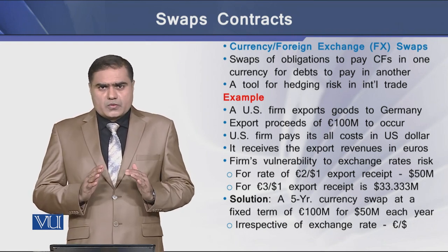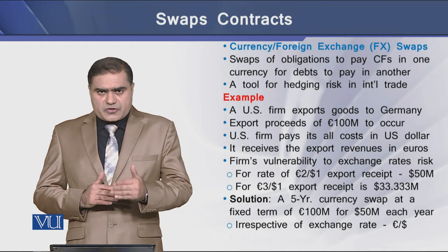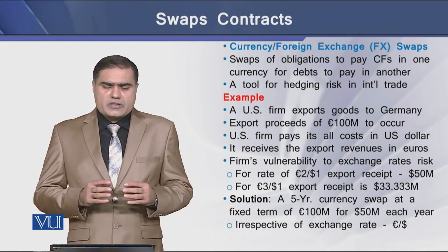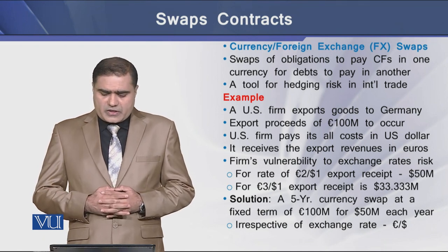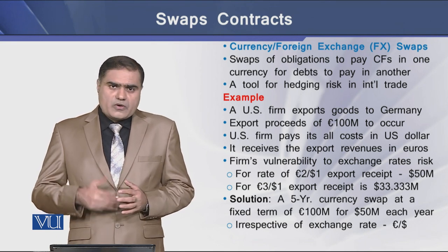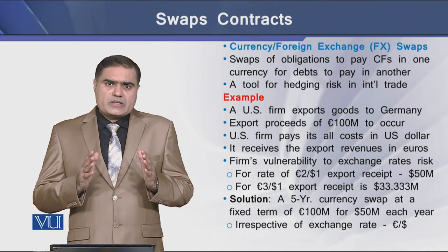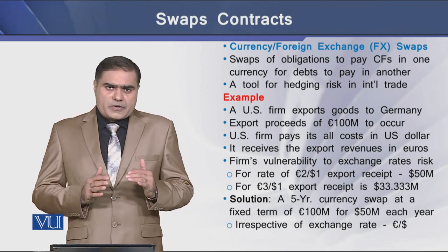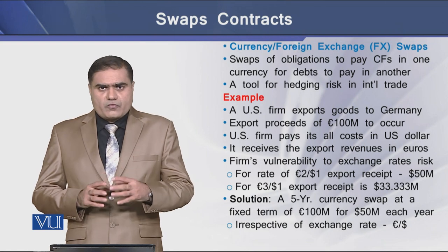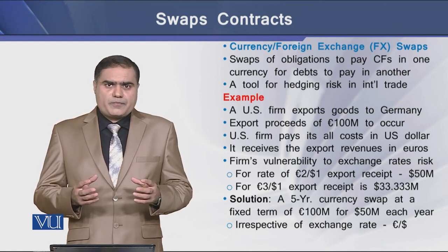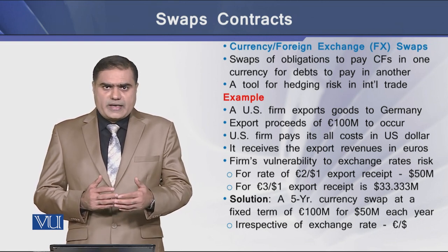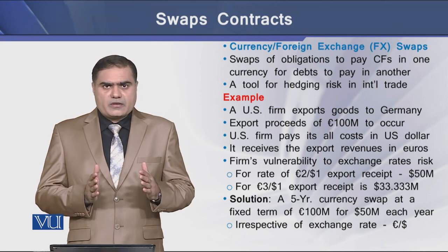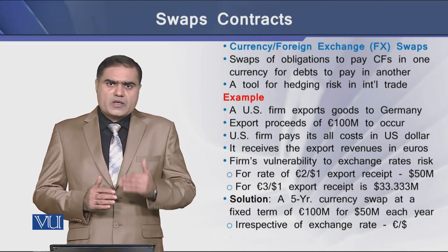The solution to this exchange risk is that the firm can enter into a currency swap. For example, the firm can enter into a 5-year currency swap at a fixed term of 100 million Euro for 50 million dollars each year. It is then immaterial what the exchange rate will be at the end of the contract, as the firm has pegged its exchange rate risk under a swap contract.